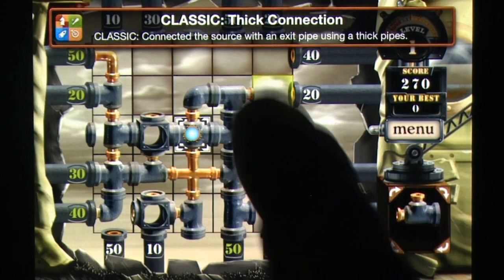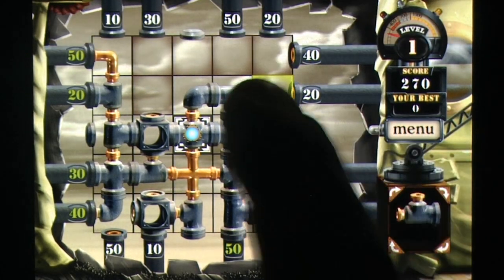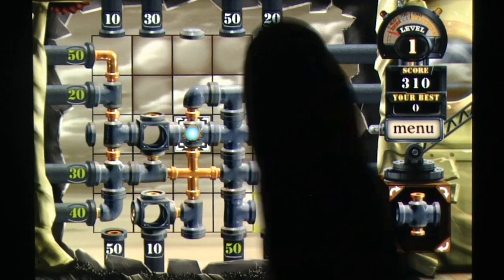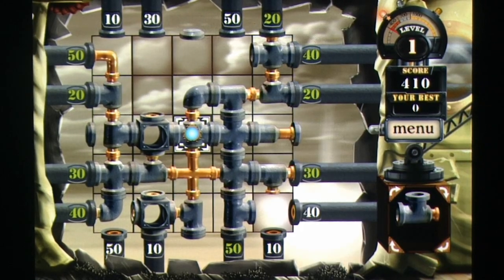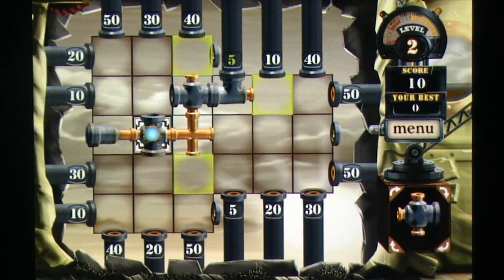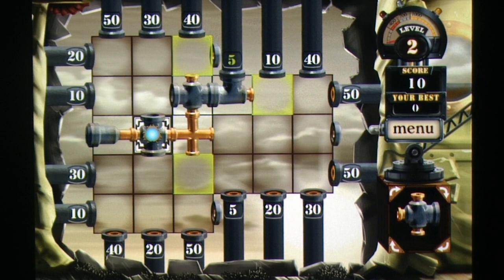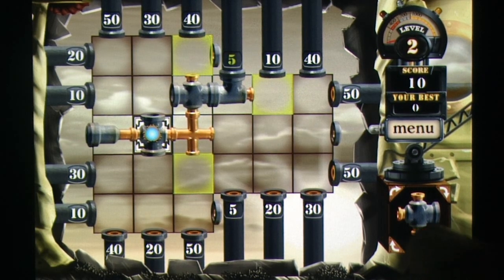There's a central pipe and, along the outer edges of the stages, pipes that are worth different points. With the pipe pieces you're given you need to rotate and place them, connecting the central unit to the point pipes all the while minimizing the damage of having to place stoppers on the board.